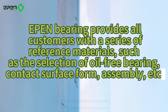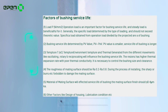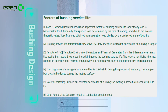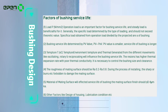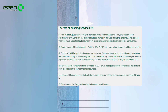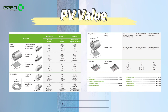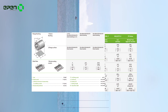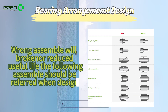EPEN bearing provides all customers with a series of reference materials, such as the selection of oil-free bearings, contact surface form, and assembly. Standard and correct design data — including type selection, contact surface form, and assembly — enables customers to select the appropriate bearing products efficiently and correctly.